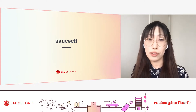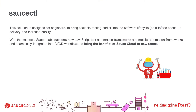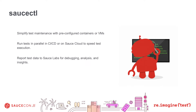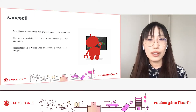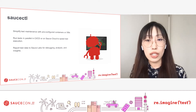One of these solutions is SauceControl. SauceControl is a solution designed for engineers to bring scalable testing earlier into the software lifecycle — shifting left to deliver quality at scale. SauceControl supports new JavaScript automation frameworks and mobile automation frameworks, and seamlessly integrates into your CI/CD workflow to bring the benefits of SauceCloud to new teams. You are able to simplify test maintenance with pre-configured containers or VMs, run tests in parallel in CI/CD or on SauceCloud to speed up test execution, and report test data to SauceLabs for debugging, analysis, and insights.